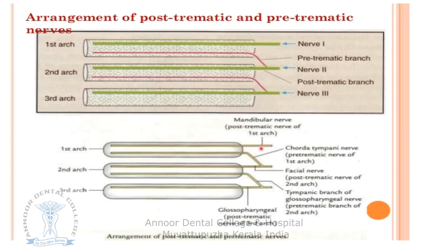In the first arch, the double innervation consists of the mandibular nerve, which is a branch of the trigeminal nerve, and the chorda tympani nerve, which is derived from and is a branch of the facial nerve.